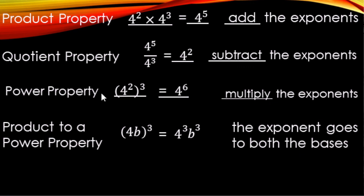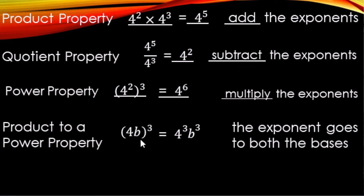Quick wrap-up: For the product property, add the exponents when bases are the same. For the quotient property, subtract the exponents — 5 minus 3 gives 2. For the power property, multiply the exponents — 2 times 3 gives 6. And for product to a power, the exponent distributes to each factor inside.